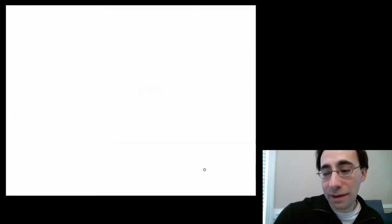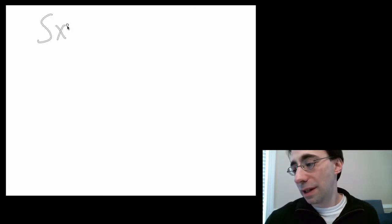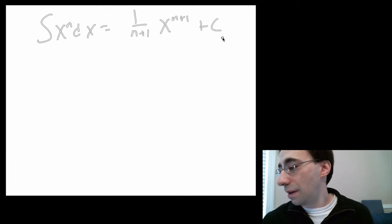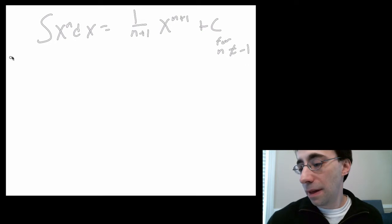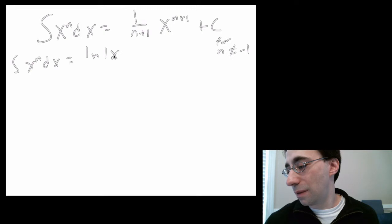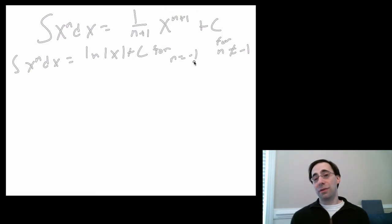So to reiterate, or summarize, the integral of x^n dx equals 1 over (n+1), x^(n+1), plus C for n not equal to negative 1, and the integral of x^n dx equals natural log of the absolute value of x plus C for n equals negative 1. That's a little more confusing than the derivative, but for almost anything, the top rule is going to work.